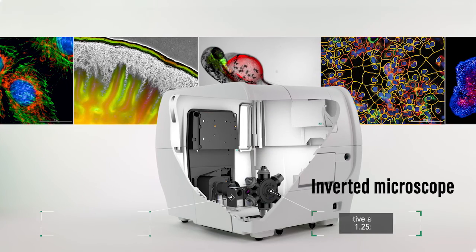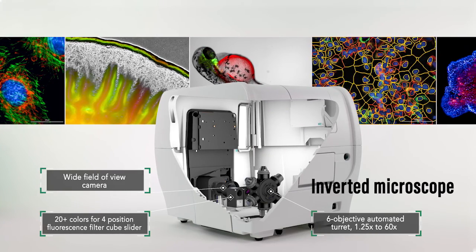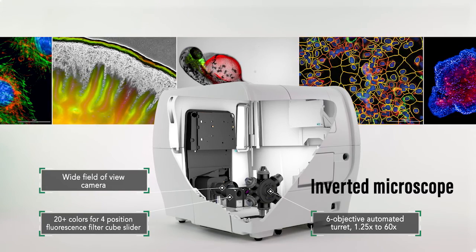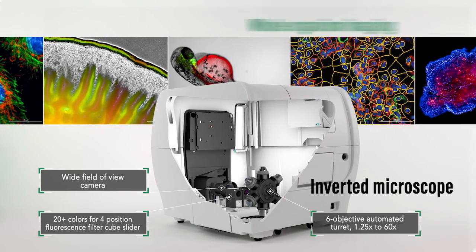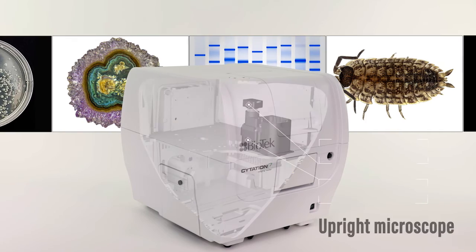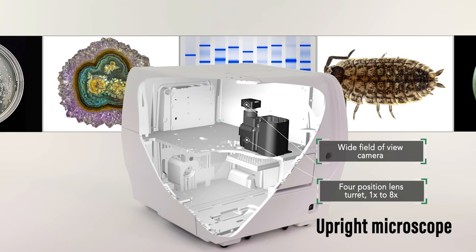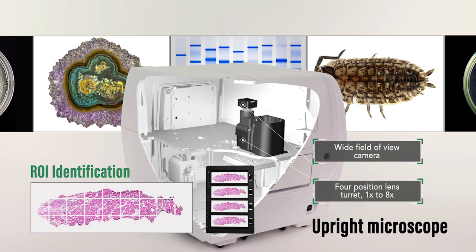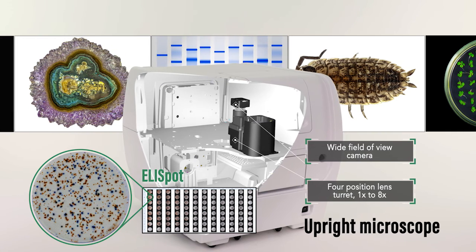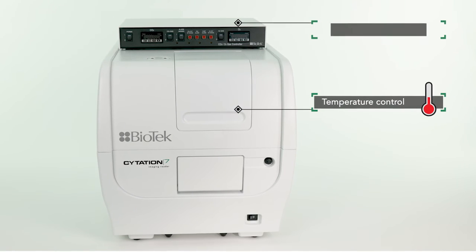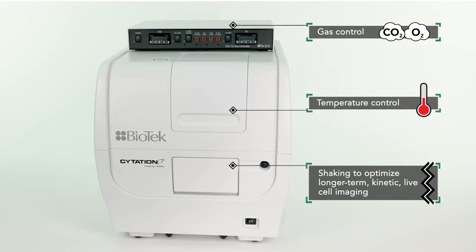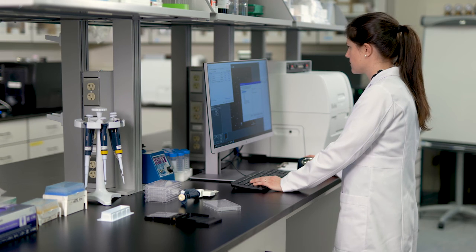Citation's inverted microscope has a 1.25x to 60x objective range, enabling image capture for a wide variety of applications — from whole organism imaging to intracellular analysis. The upright microscope expands the application range to region of interest (ROI) identification and ELISpot assays. Citation's temperature control, gas control, and shaking provide the ideal environment for kinetic live cell imaging.